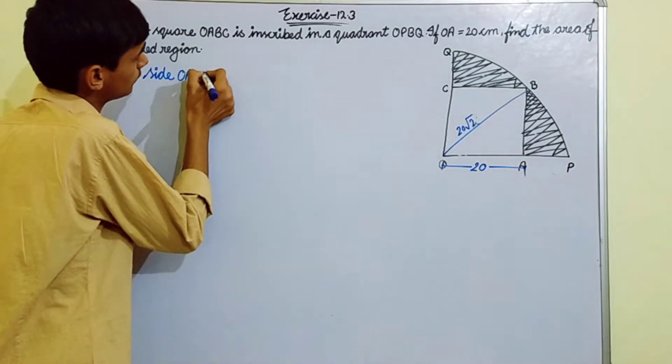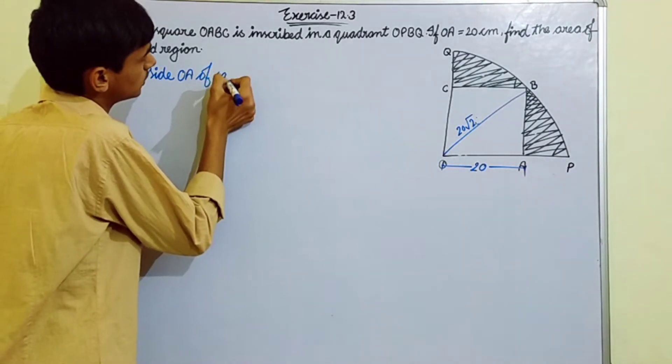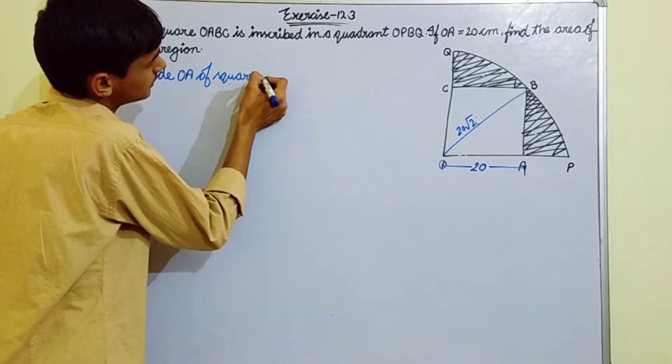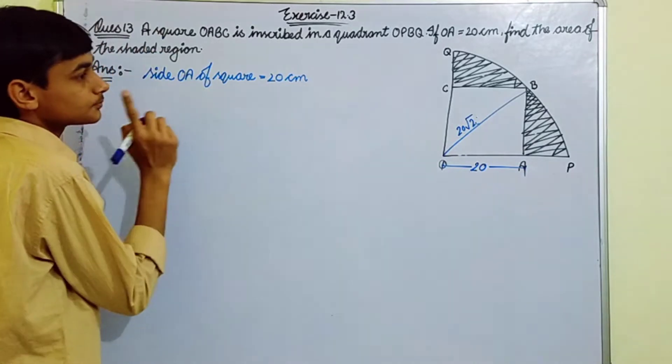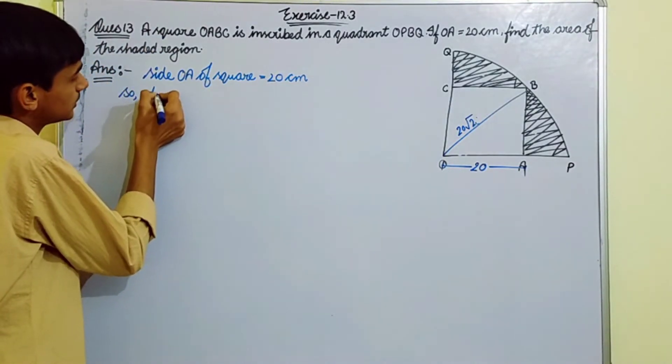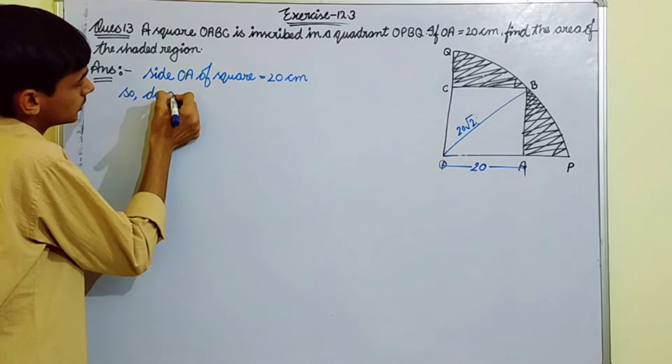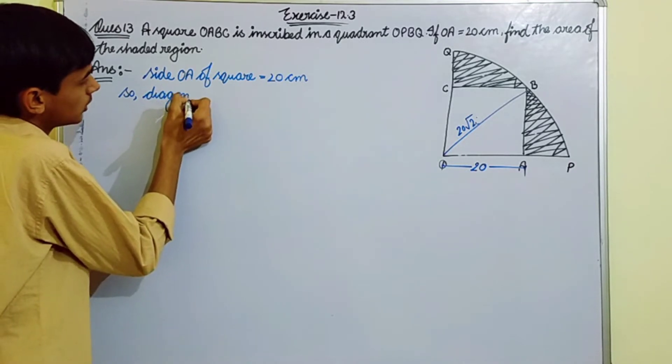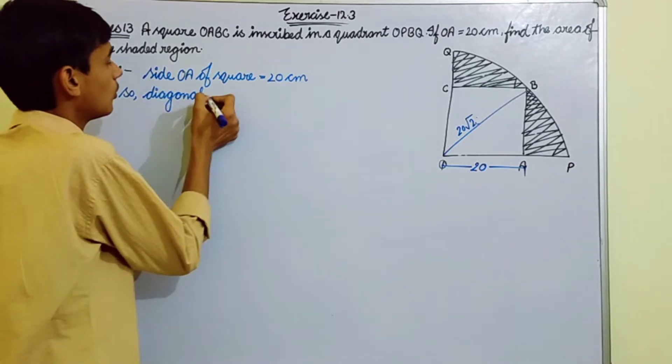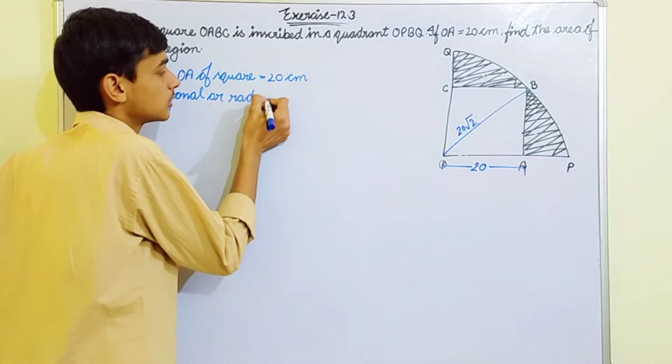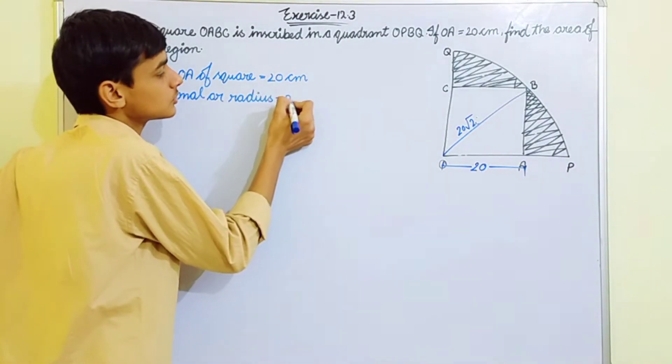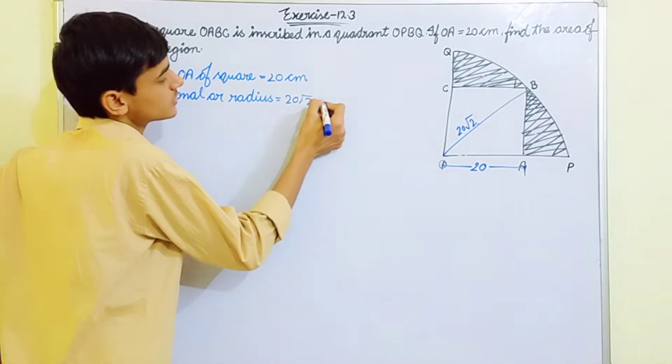Side of square is equal to 20 centimeter. So diagonal, or we can say the radius, is equal to 20 root 2 centimeter.